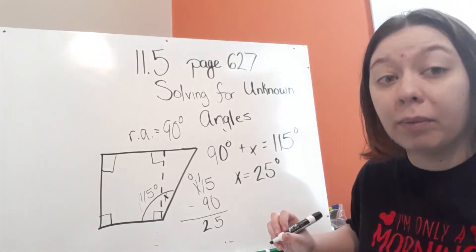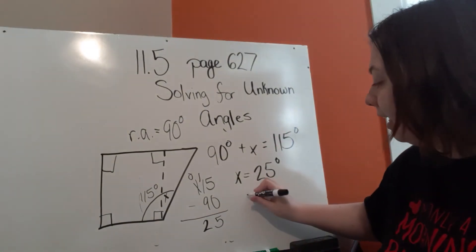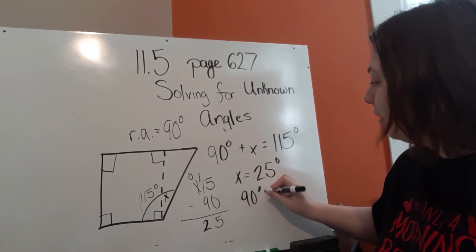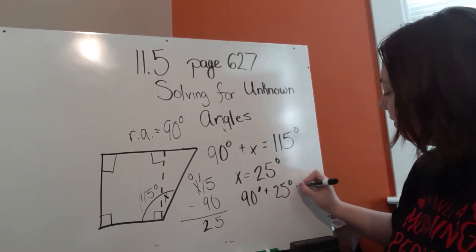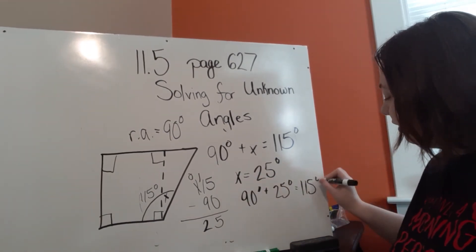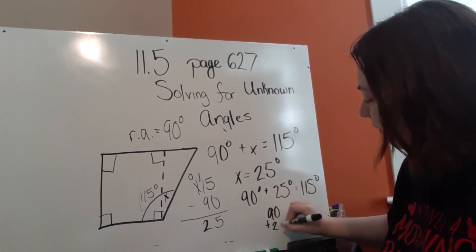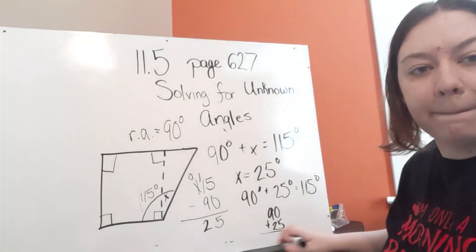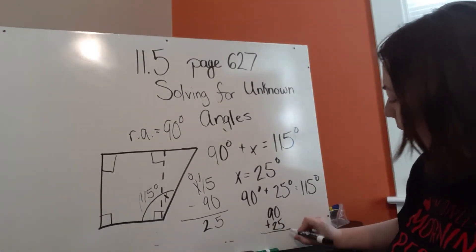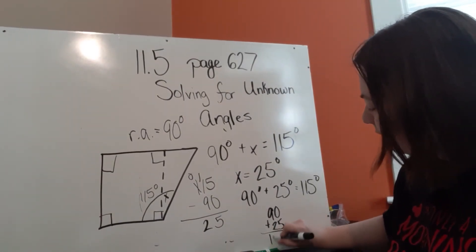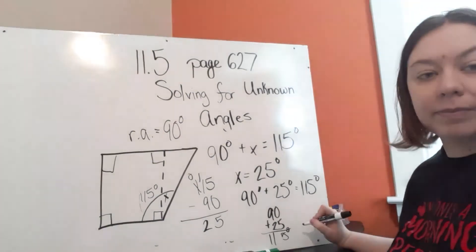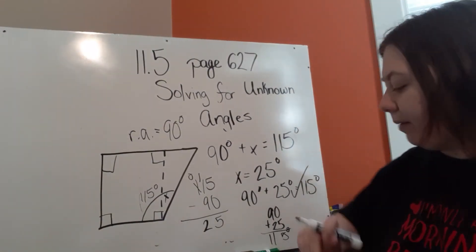And again, I can always go back and check. I can plug it in. If 90 plus 25 equals 115, I know that I'm correct. So 90 plus 25. 0 plus 5. 9 plus 2. It is 115. I am correct.